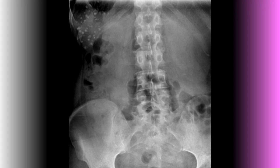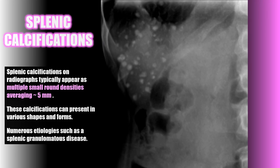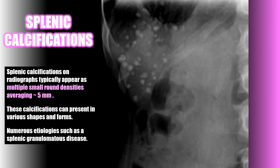On this radiograph you should notice multiple focal areas of soft tissue calcification in the left upper abdomen within the expected region of the spleen. Splenic calcifications typically appear as multiple small round densities averaging about five millimeters in size. These calcifications can present in various shapes and forms and can be caused by numerous etiologies, such as splenic granulomatous disease.